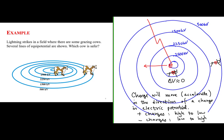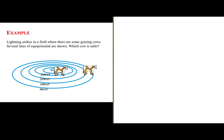Let's look at the cow that is farther away. Even though that cow is farther away, let's look at the difference in potential between the feet of that cow. One foot of the cow is on 1500 kilovolts, and the other foot is on 500 kilovolts.